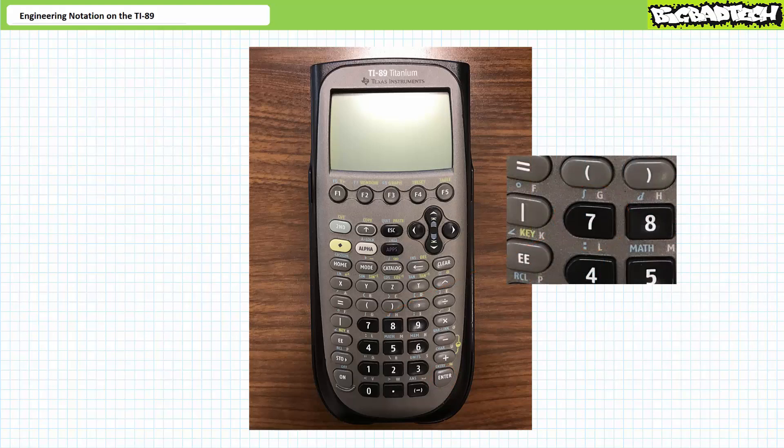The symbol written on the key is the natural function of that keypad. Meaning if I haven't pressed any modifiers, the seven key will output a seven. If, however, I press a modifier key like the alpha key, the seven key will write the letter G as indicated in the upper right-hand corner.